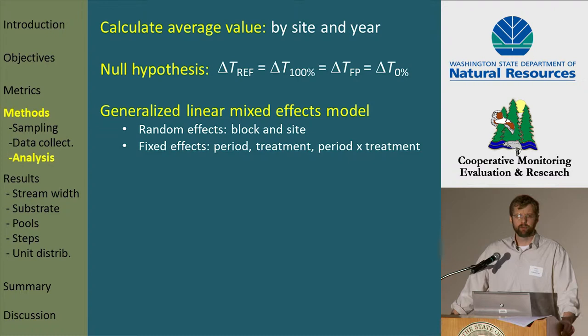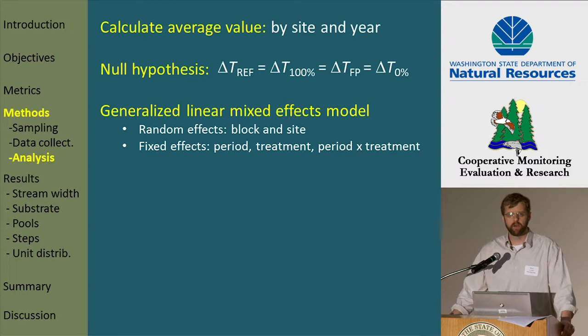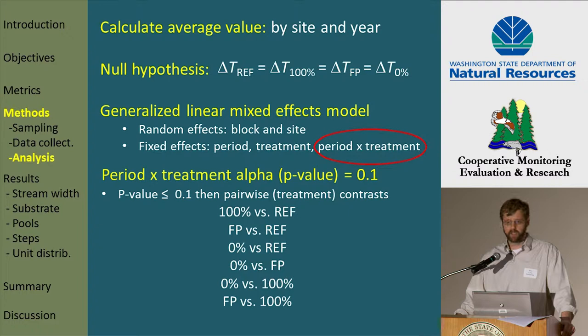We calculated an average value for each metric by site and year, using the same null hypothesis and the same generalized linear mixed effects model. We are focused here on the period-by-treatment effect with our predetermined alpha value of 0.1. When we did see a significant period-by-treatment effect — when that p-value was less than or equal to 0.1 — we then compared each of those treatments to the reference and to each other for those metrics.